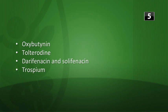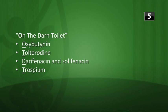What anticholinergics are used in the treatment of urge-type urinary incontinence? The answer is oxybutynin, tolterodine, darifenacin, solifenacin, and trospium. A student mnemonic: 'on the darn toilet' — ON stands for oxybutynin, THE stands for tolterodine, DARN stands for darifenacin, and TOILET is trospium. That's a good way to remember those.